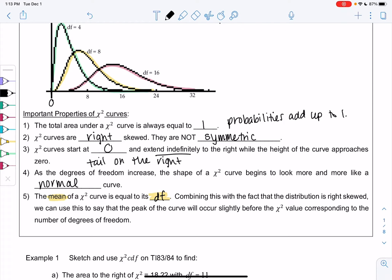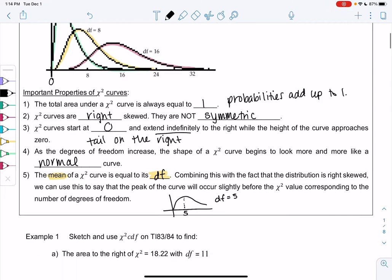So combining this with the fact that the distribution is right skewed, we can use this to say that the peak will occur slightly before the χ² value corresponding to degrees of freedom. So if we have a chi-square, let's say degrees of freedom is 5, then 5 will be slightly before the peak, and that's because the mean will be near the peak.